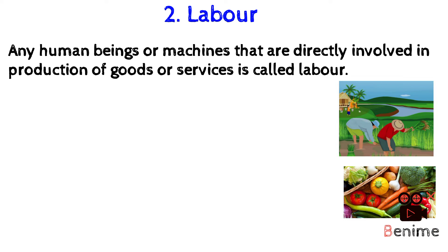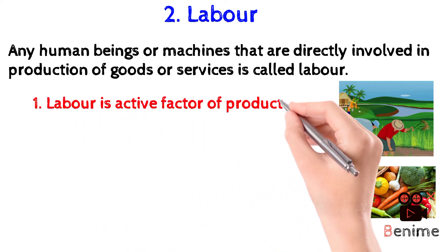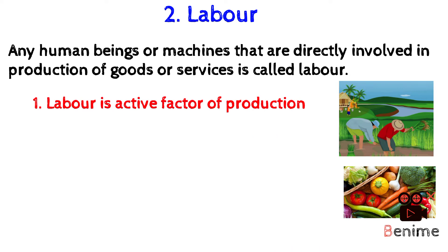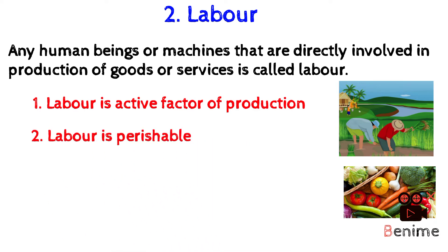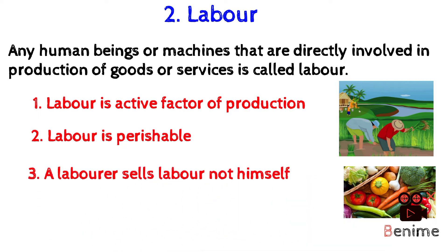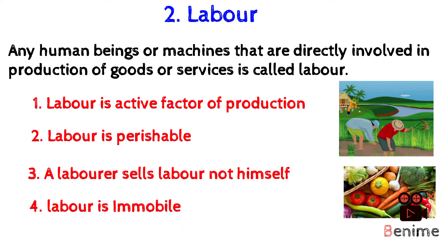Now let us see some features of labor. Number one: labor is an active factor of production, meaning a person must be actively involved in the production of goods or services. Number two: labor is perishable, meaning labor gets exhausted if we don't use it — it must be used while producing, otherwise it has no value. Number three: a laborer sells labor, not himself — they sell their hard work only, not themselves. Number four: labor is immobile, meaning we cannot transfer one person's labor or hard work to another person's body.